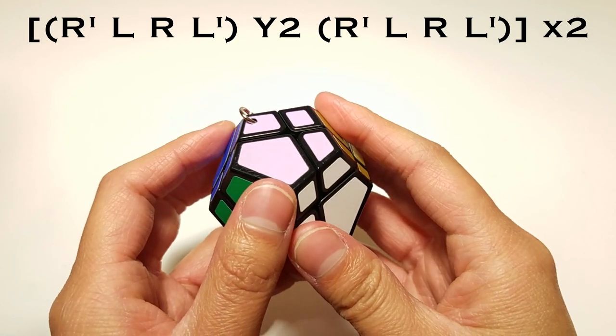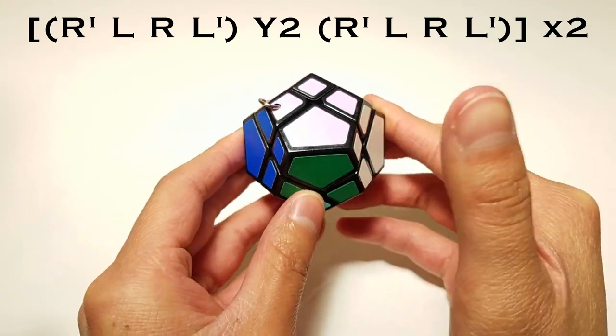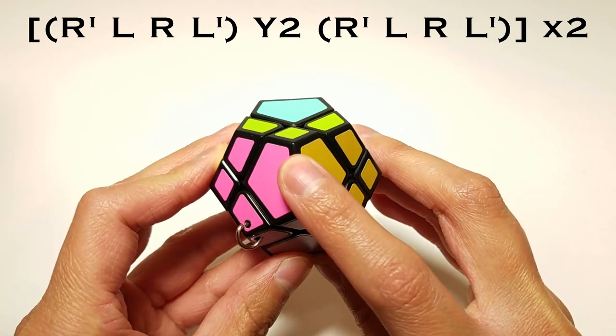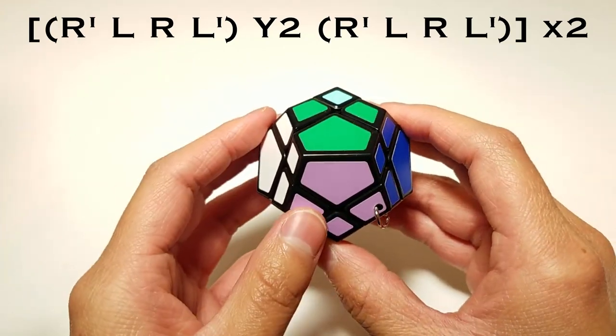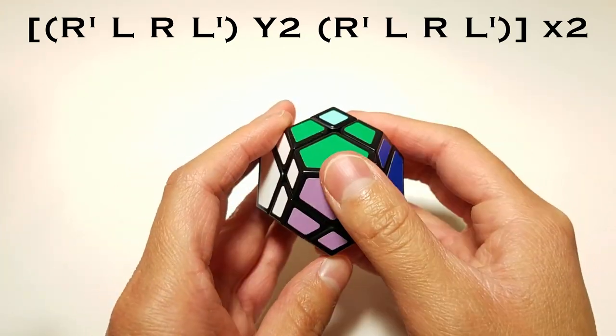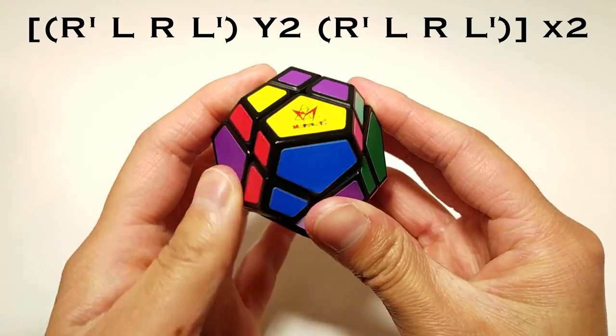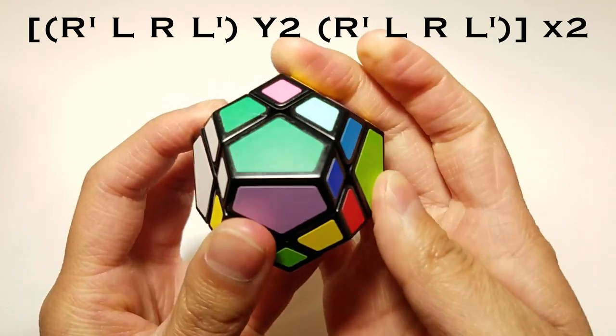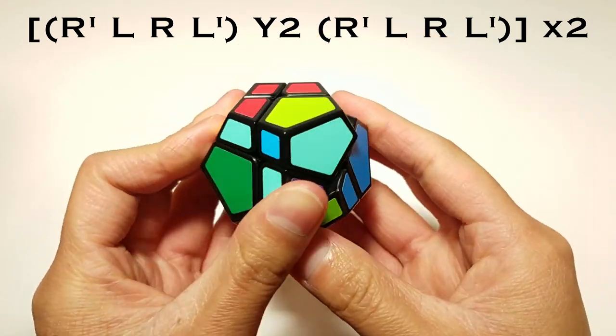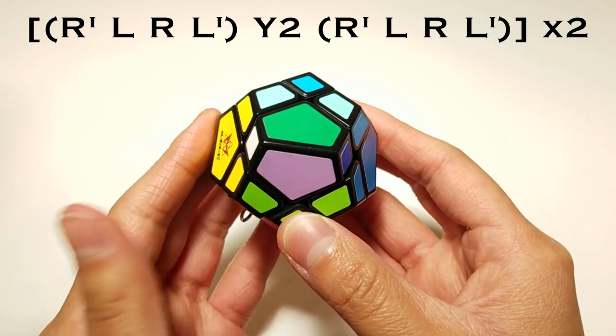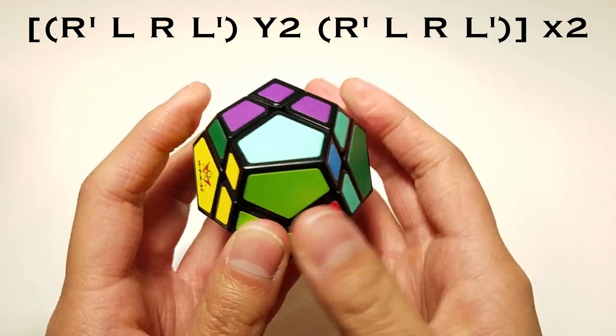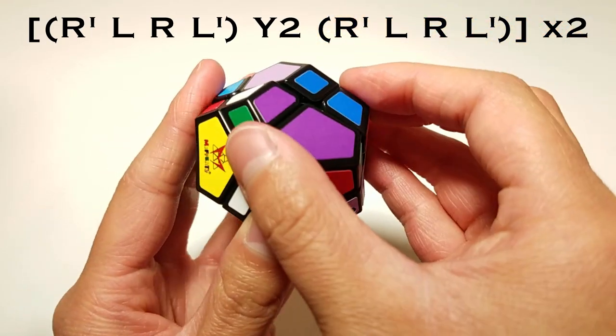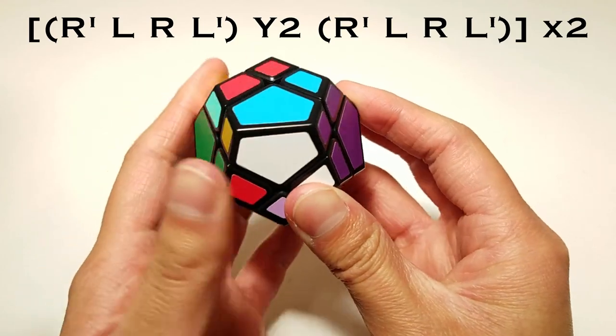So now we should have the adjacent centers. So now what you want to do is place one of the centers, it doesn't matter which one, on the bottom. So this one's front, so it could be like that or it could be like that, it really doesn't matter. So you've got that bottom, that front. And that's only halfway, so freeze. Now just do the algorithm again. And that should solve the puzzle.